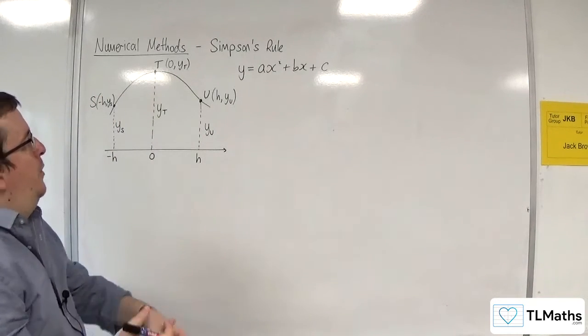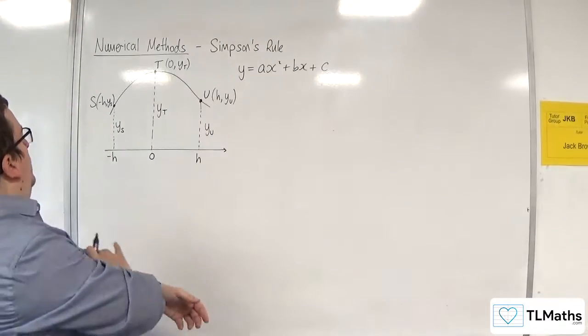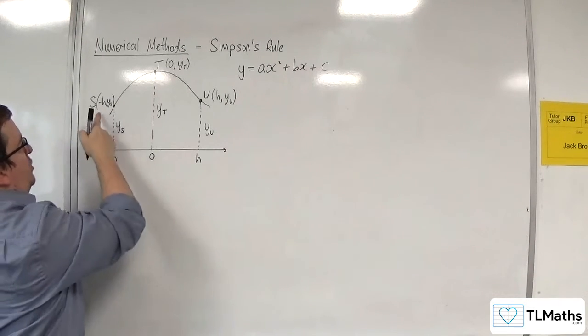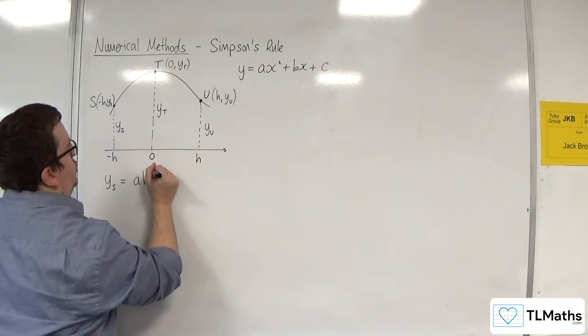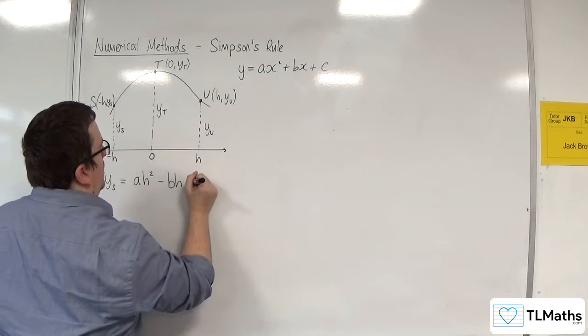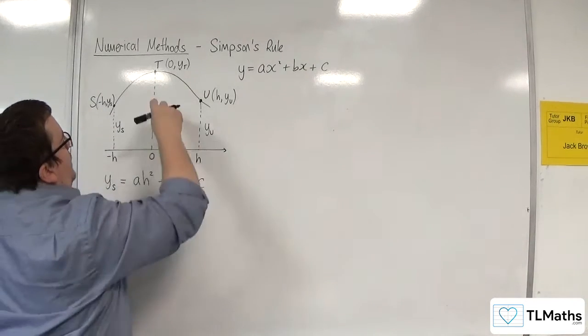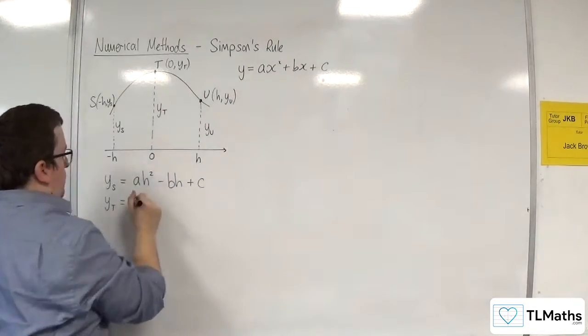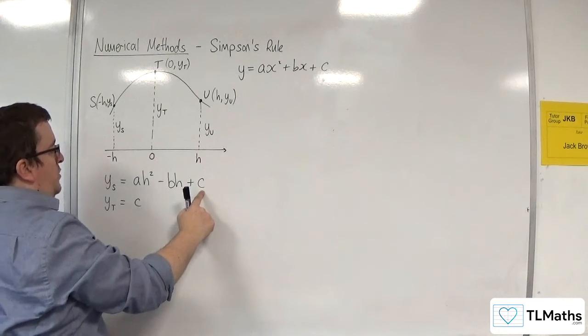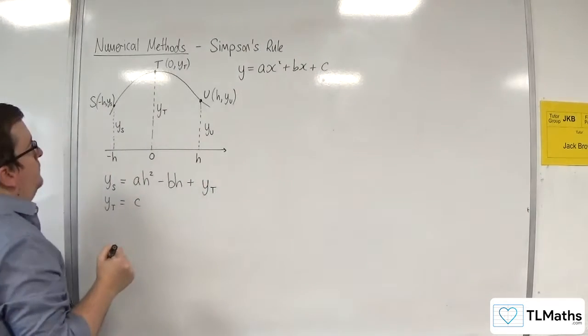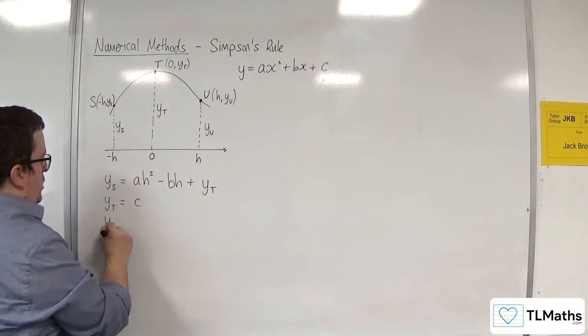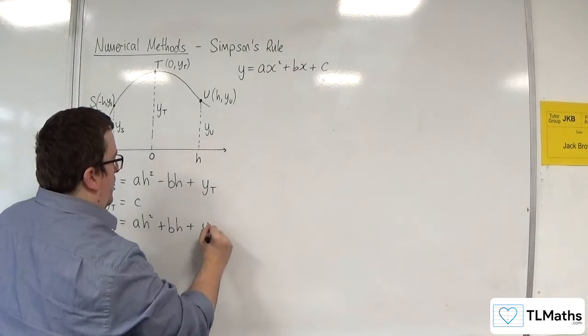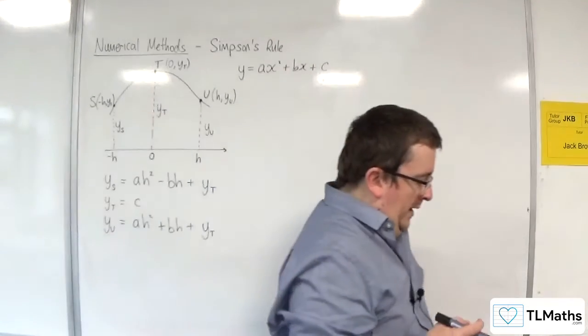Now I'm going to substitute those three points into this function. So, let's do this one first. So we would have ys equals, substituting in minus h for each of your x's, you would get ah squared take away bh plus c. Then, for this one, you would get yt equals, well, with x is 0, you just get yt is c, of course. So that c there, we could replace it with yt. And for this one, we would have yu equals ah squared plus bh plus c, which we now know is yt.